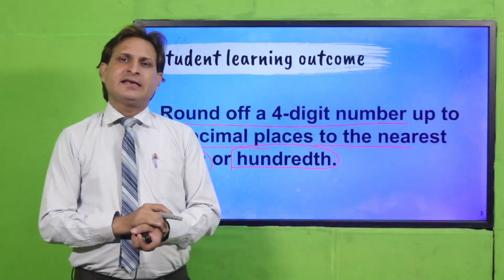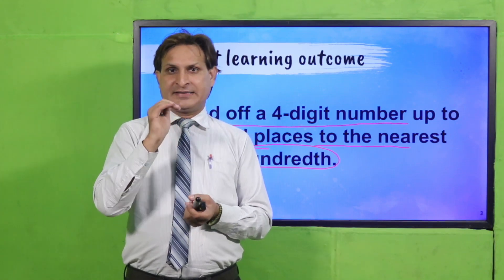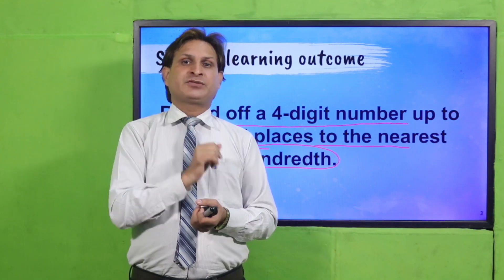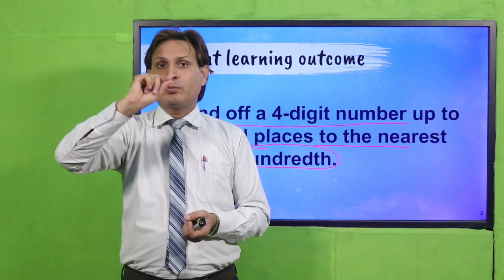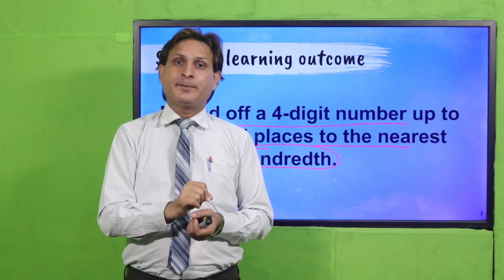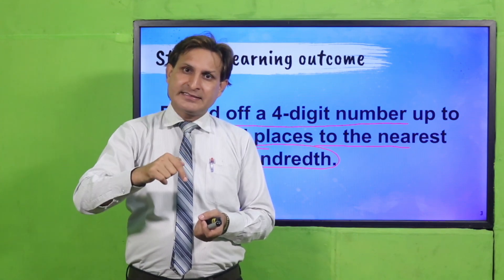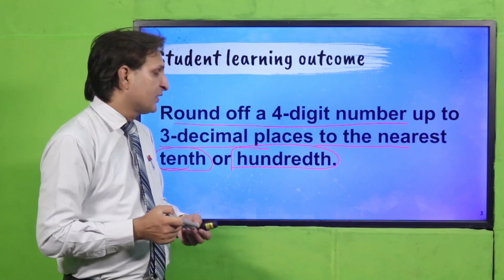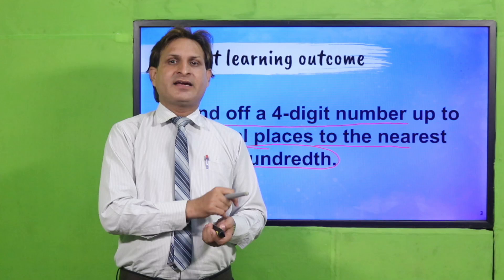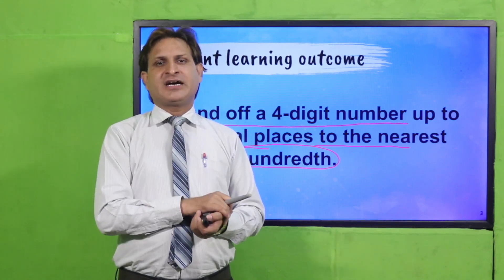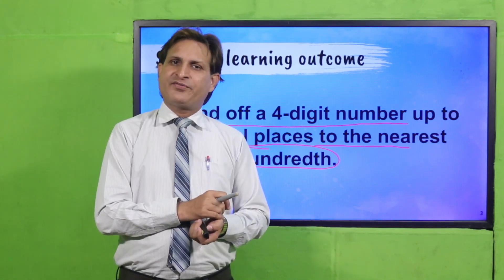हमने basically यहाँ पर जो decimal numbers हैं उनको round off करना सीखना है, जैसा कि हमने whole numbers को किया था। Whole numbers को कैसे किया था? Up to tens किया था, up to hundreds किया था। But यहाँ पर हमने decimal numbers को up to tens and hundreds करना है। Decimal में ही रखना है जो result है। Round off वैसे ही करना है, वही methodology याद रखनी है। But slight difference है यहाँ पर।